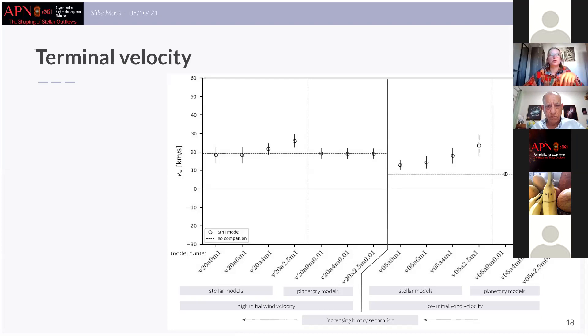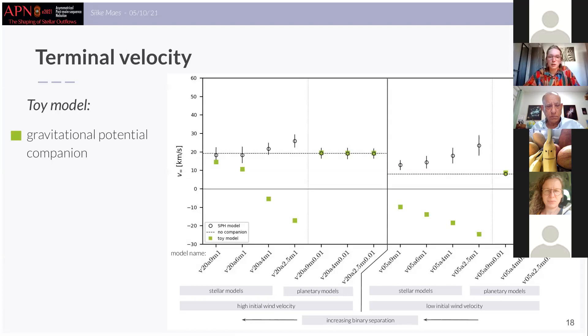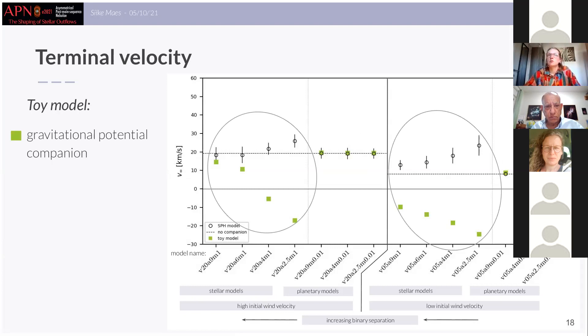Now to investigate the cause of this deviation we constructed a toy model. So we calculated analytically the terminal velocity, what the terminal velocity would be purely due to the effect of the gravitational potential. So in green you can see the results here. We see that for the planetary models this toy model explains very well the observed or defined terminal velocity. However for our stellar models, so the models with the stellar companion, there is an important acceleration mechanism missing because the resulting terminal velocity of the toy model is negative.